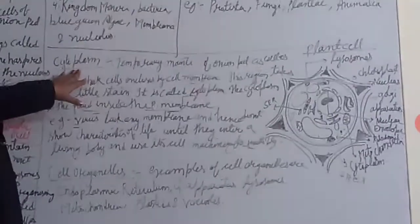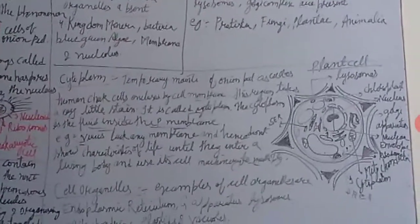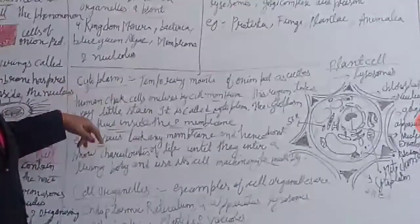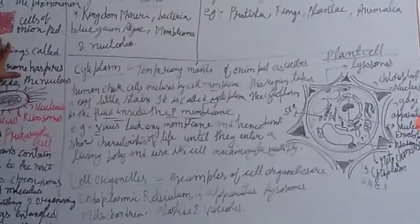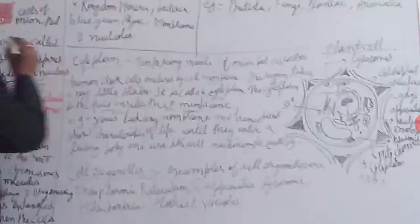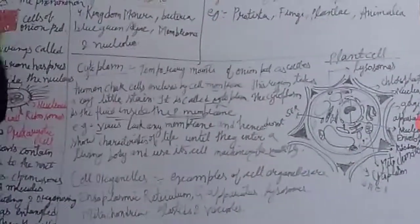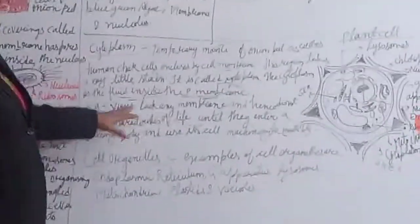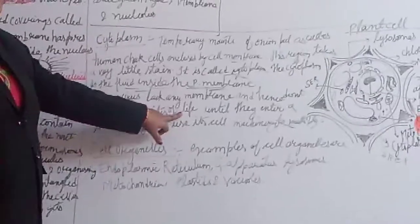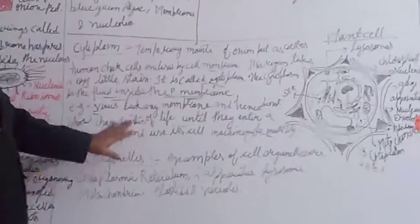Now look at cytoplasm. The liquid present inside the cell is called cytoplasm. The cytoplasm is the fluid inside the plasma membrane. Viruses lack any membrane and hence do not show characteristics of life until they enter a living body and use its cell machinery.